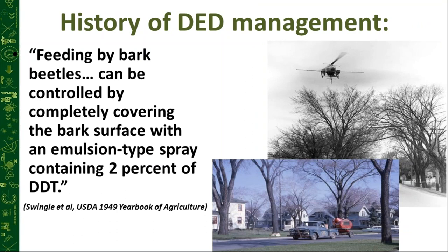Turning to the history of Dutch elm disease management — I have some old pictures from the USDA 1949 Yearbook of Agriculture, dedicated to trees. At that time Dutch elm was a relatively new arrival, only around for 10 to 15 years. A direct quote from that era: 'feeding by bark beetles can be controlled by completely covering the bark surface with an emulsion type spray containing 2% of DDT.'